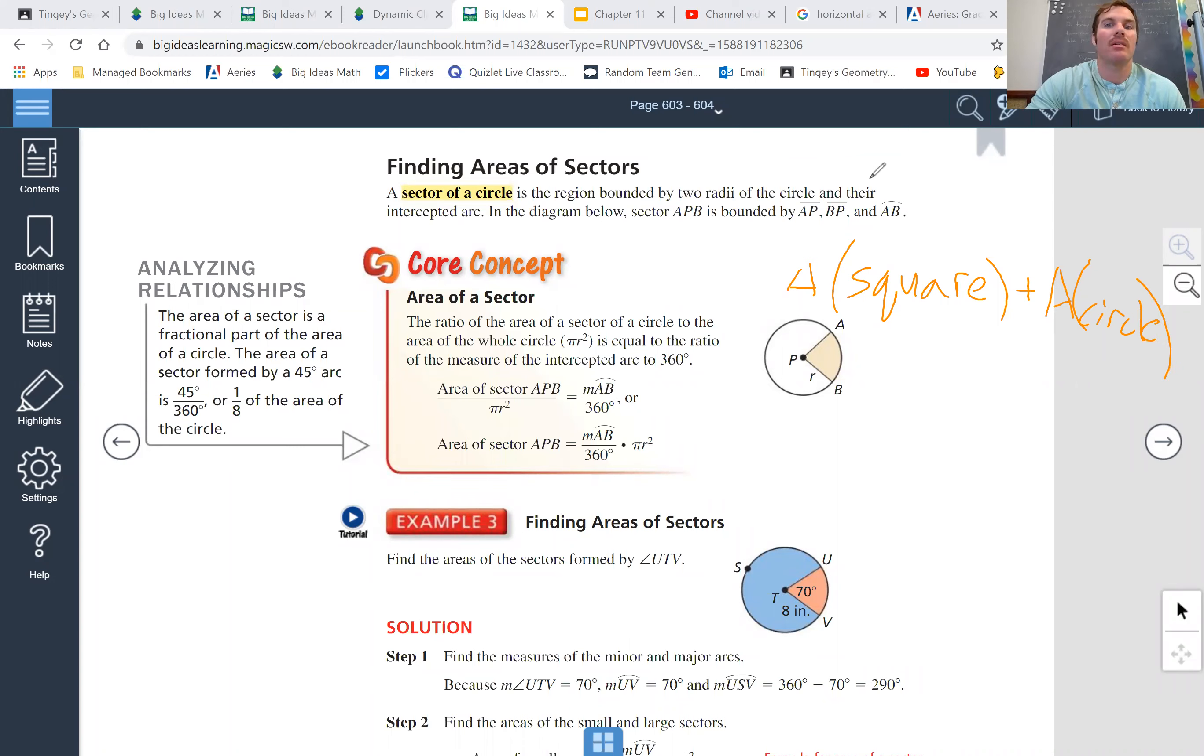Now, how do you find area of a circle? The area of a square, sorry, the area of a square equals base times height. And the area of a circle, pi r squared. All right.